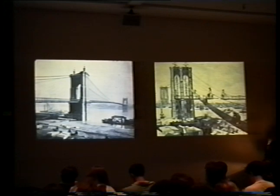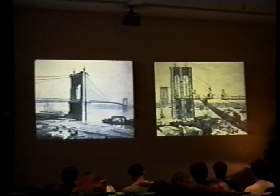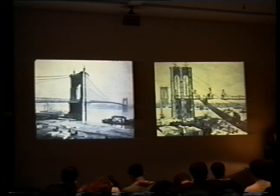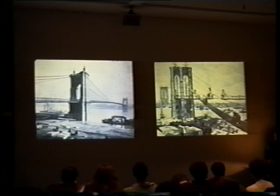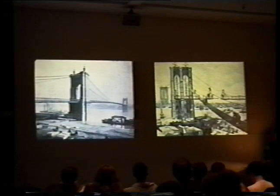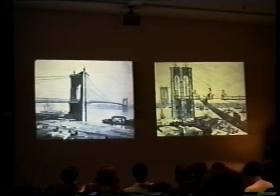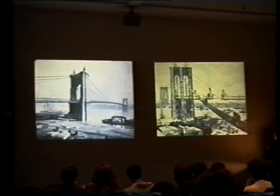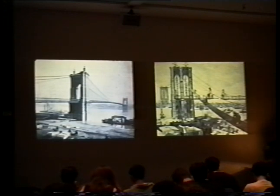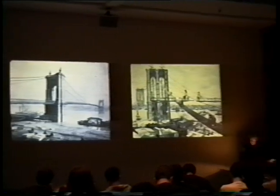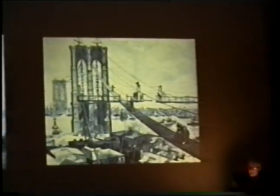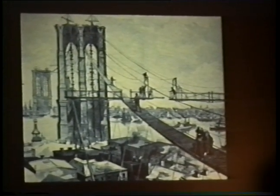On the left we see Roebling's first really major suspension bridge, in Cincinnati, Ohio, built in the 1850s and still existing. On the right is Roebling's greatest bridge: the Brooklyn Bridge, going from Manhattan over the East River to Brooklyn. We see it here under construction — begun in 1867, it took many years and wasn't completed until 1883. It was a tremendously complex construction, likely the most ambitious construction project in America up to that time.